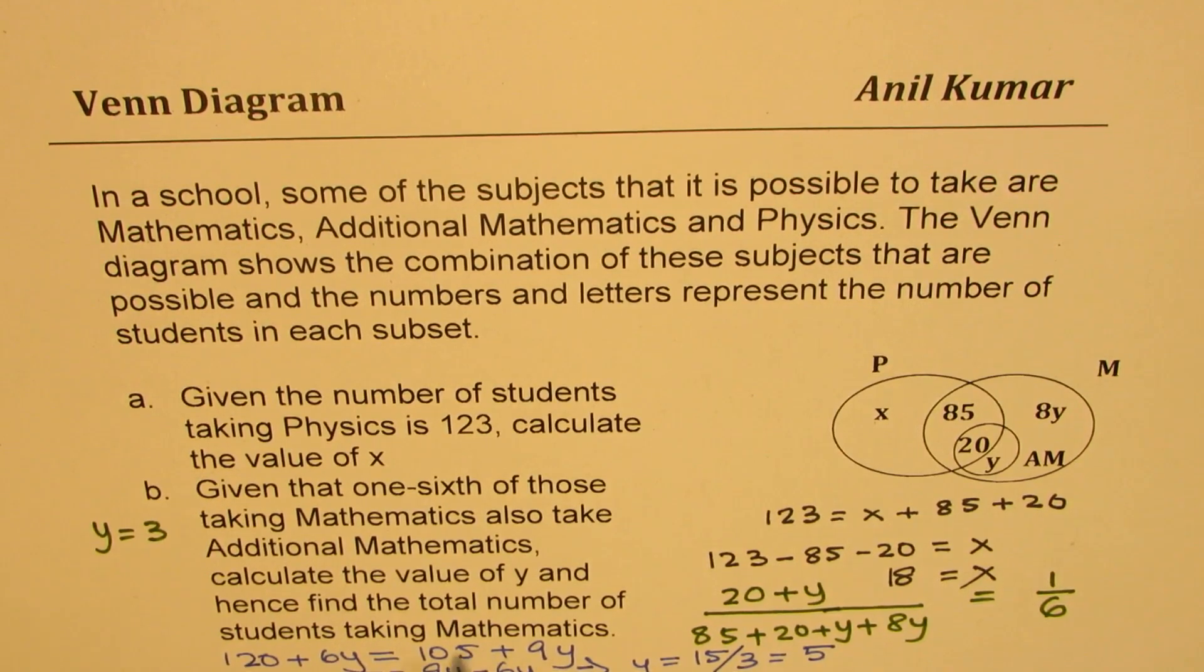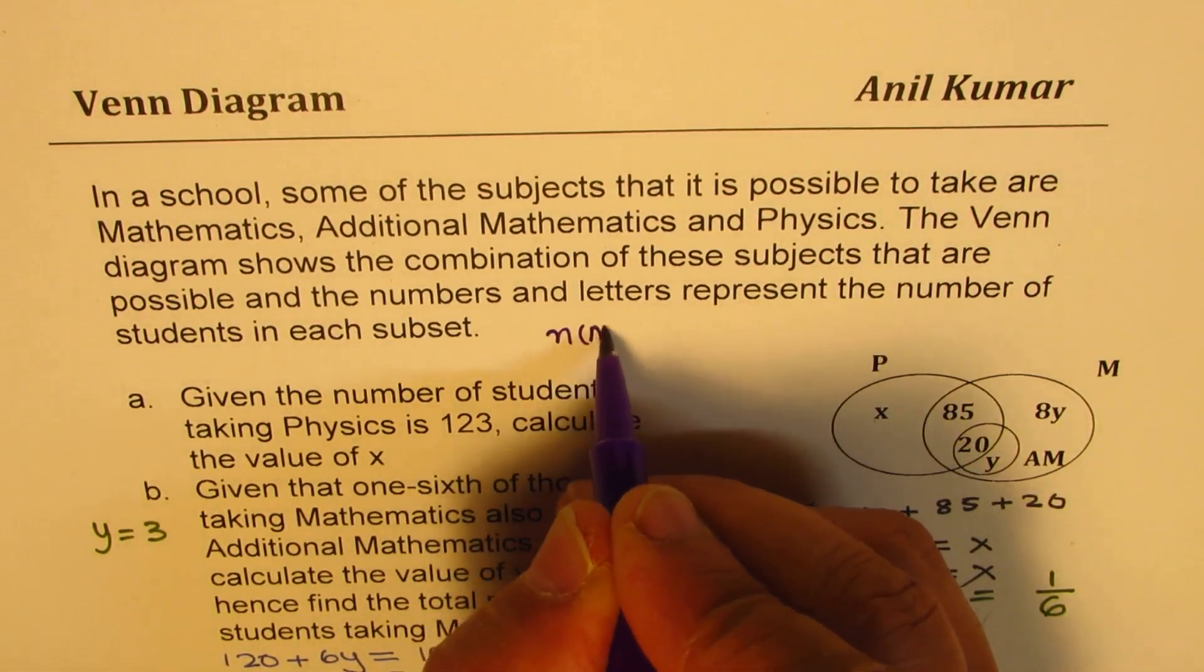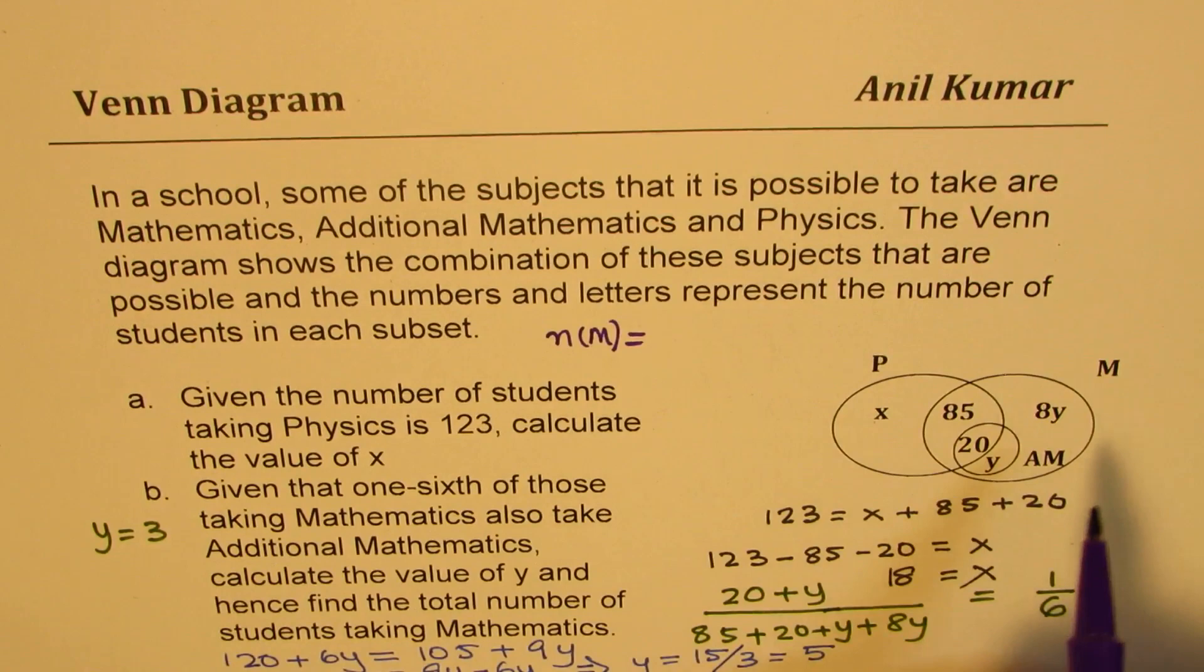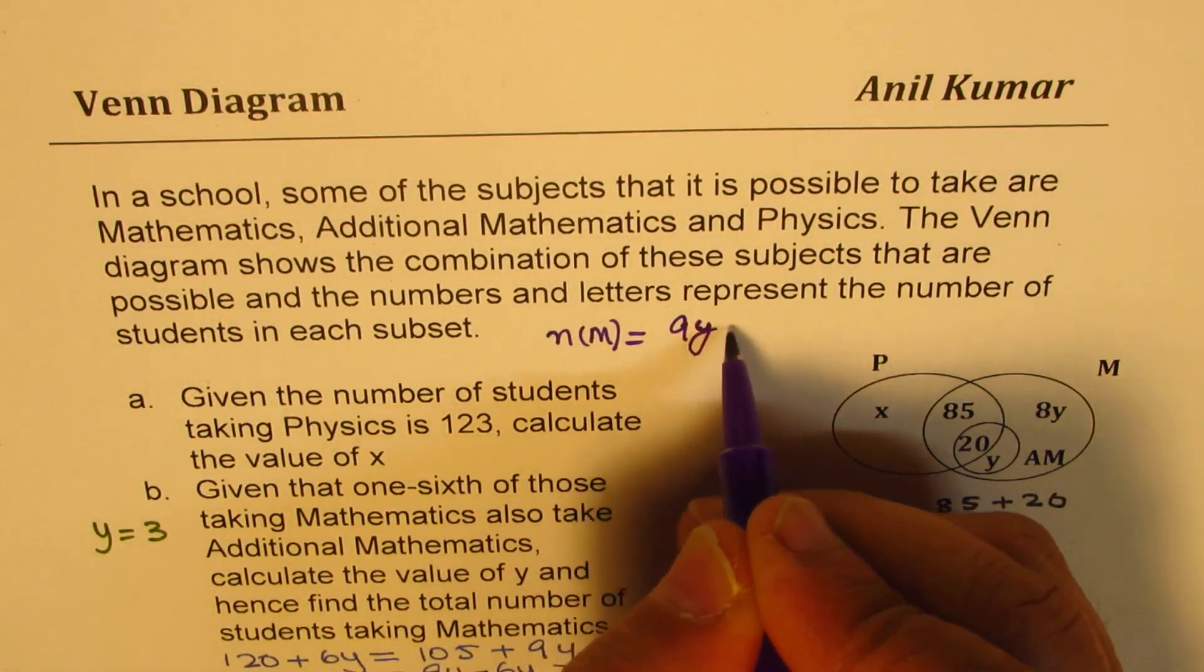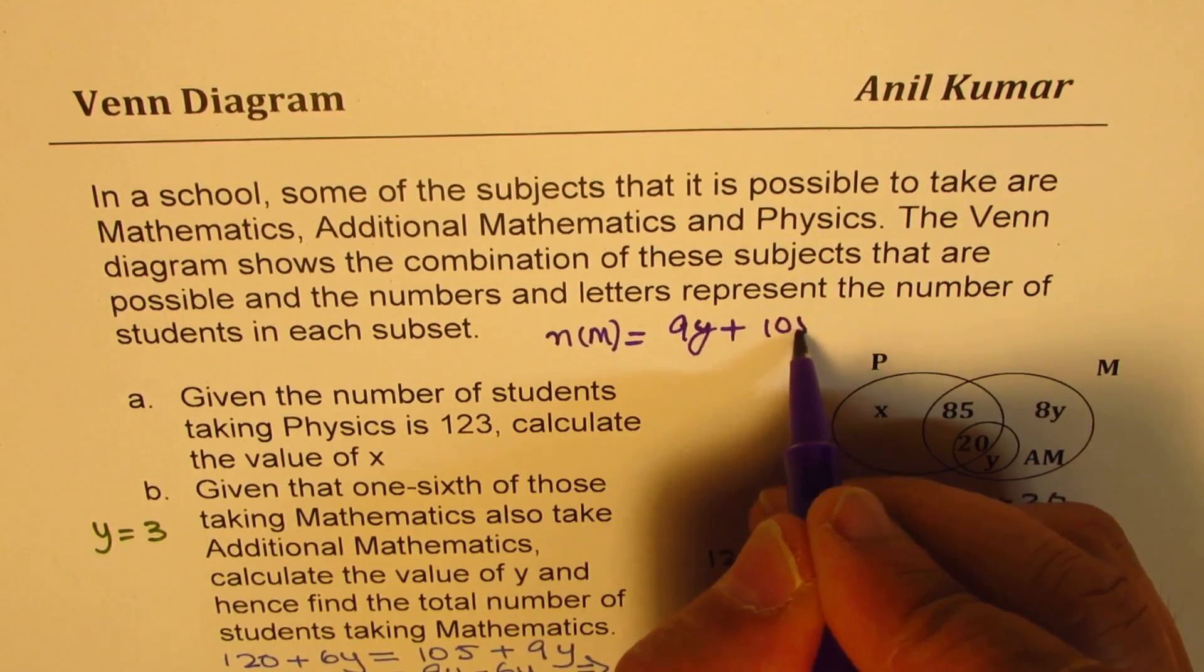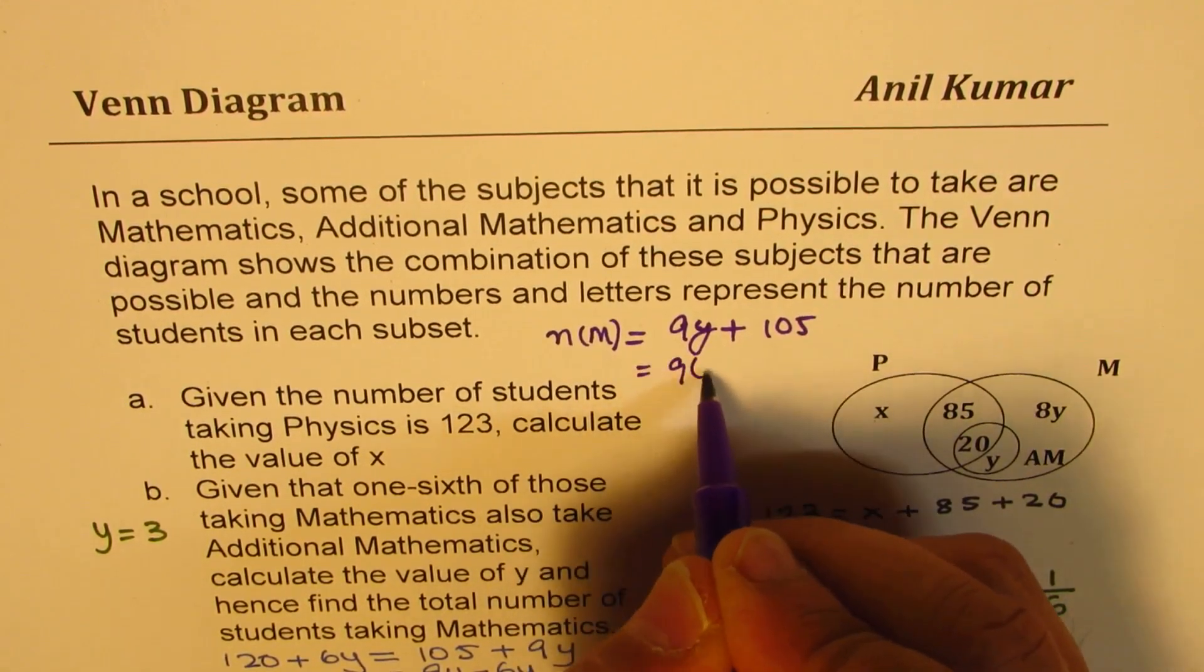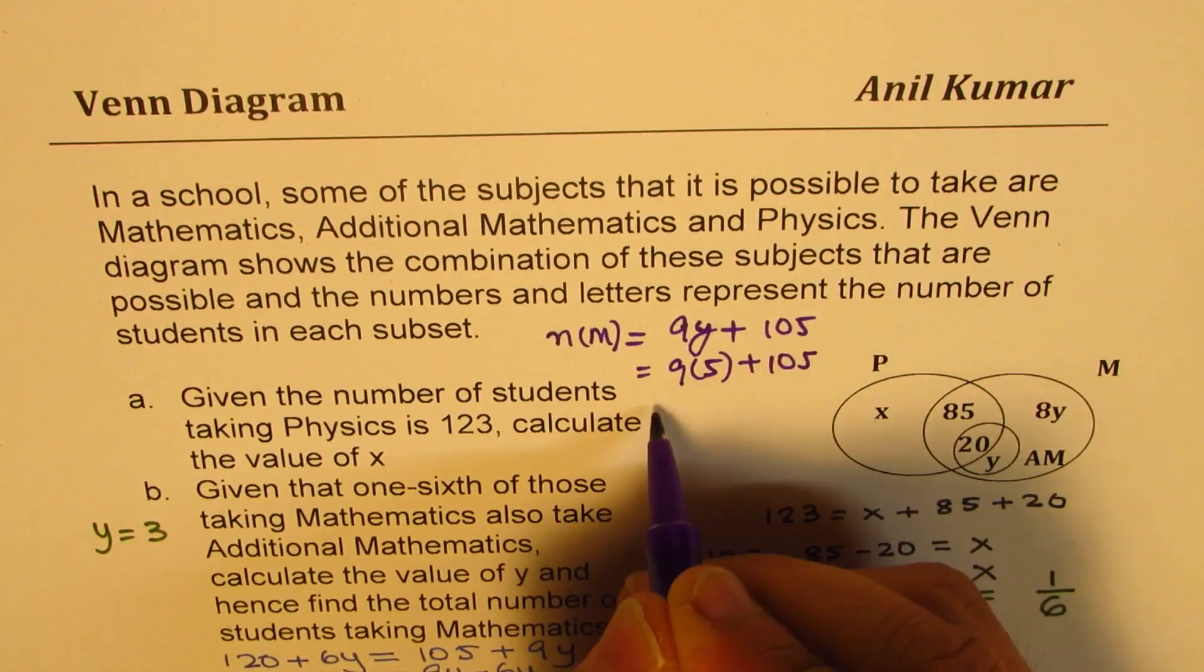Let me write down here so y is equal to 3. Now we need to find total number of students taking mathematics, right? So that is this big number in the denominator, perfect. So let's put y as 5 in this and then figure it out. So this denominator is 105 plus 9y, right? So which is, let's use another ink here and then write down, so total number of students who have taken mathematics will be equal to 9y plus 105.